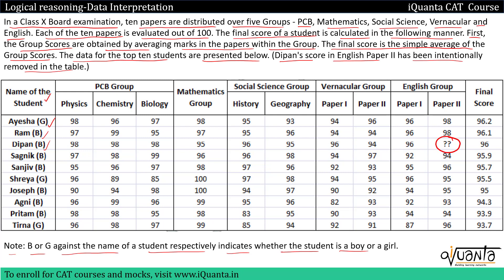We have 5 groups. PCB group has 3 subjects: Physics, Chemistry, Biology. Mathematics group has only one subject. Social Science group has 2 subjects: History and Geography. Vernacular group has 2 papers: paper 1 and 2. English group has 2 papers: paper 1 and 2. And we have the final score of all the students.